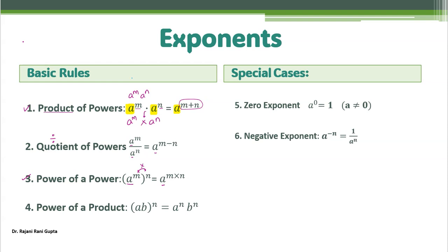Then there is the product of powers rule: if you have the product of two terms — a times b — written as (ab) power n, this power gets distributed to both variables a and b. So it becomes a power n times b power n.